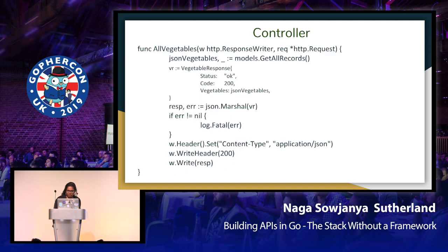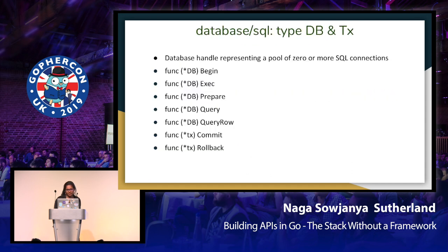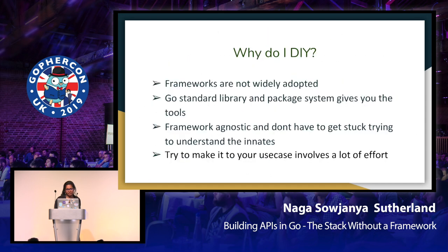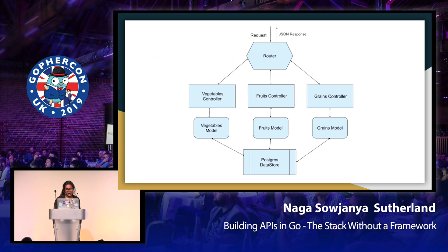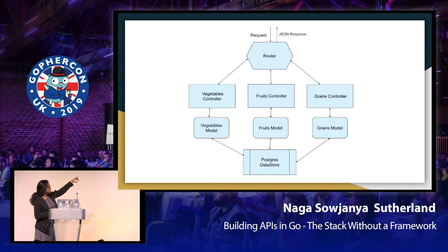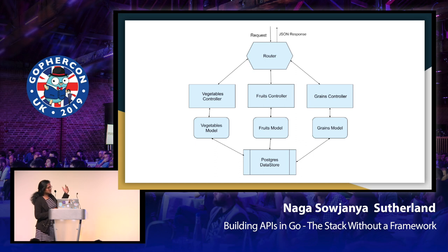Going back to the architecture diagram — the router is implemented with GoShi. In the controller, authentication also happens, and if it passes, it goes to the model, gets or updates the data based on whichever operation you want to perform, and returns it back as a JSON response. It's a really simple set of packages used to implement that.